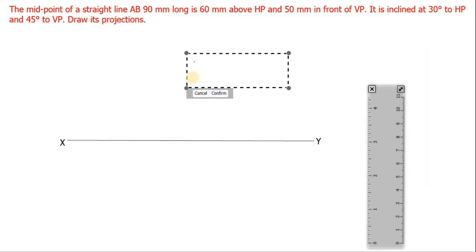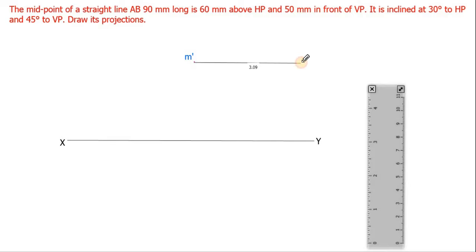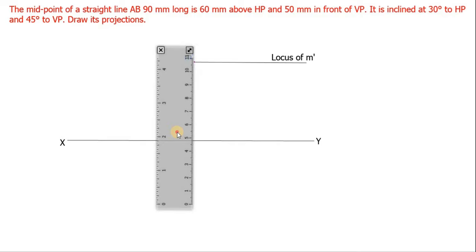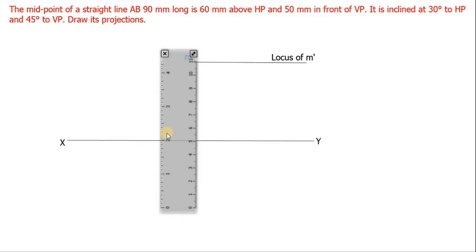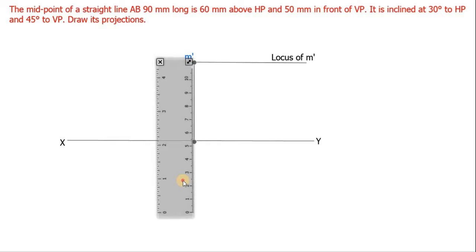Draw a locus line from M dash — this is called the locus of M dash. Then, keeping the scale perpendicular to XY from M dash, draw a straight vertical line down to XY. This vertical line is the projection line of M dash.